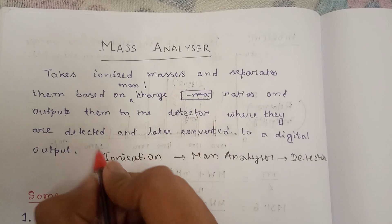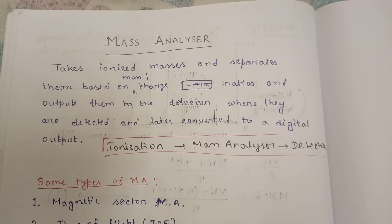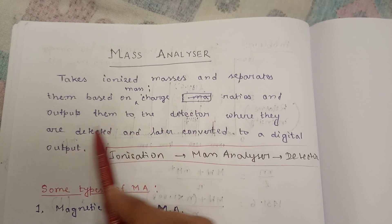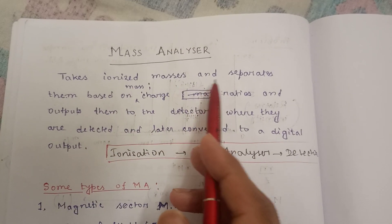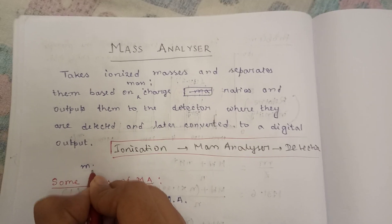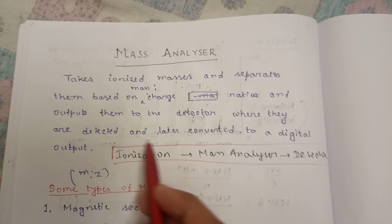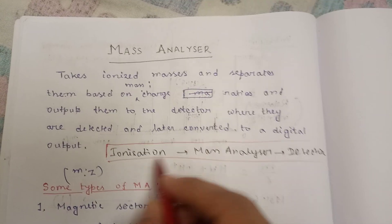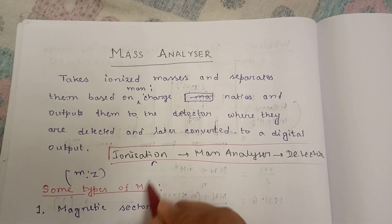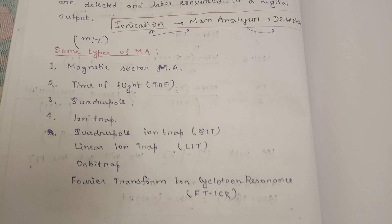This is the core of MS or mass spectrometry. So what is a mass analyzer? It takes ionized masses and separates them based on mass-to-charge ratio — remember M/Z — and outputs them to the detector, where they are detected and later converted to a digital output. So first ionization is done, then the mass analyzer, and then detection as a digital output.